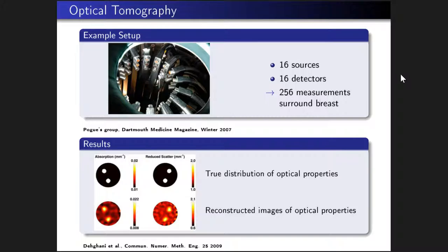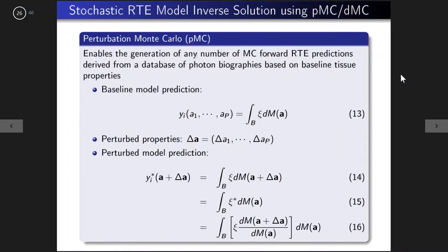A question from David: for PMC, the absorption weighting component — specifically the continuous absorption weighting operator — is that not a perturbative operator? It seems like the change in path lengths is the true approximation. Carol confirmed you can apply PMC using either continuous absorption weighting or discrete absorption weighting, and the weight factor differs between the two methods.